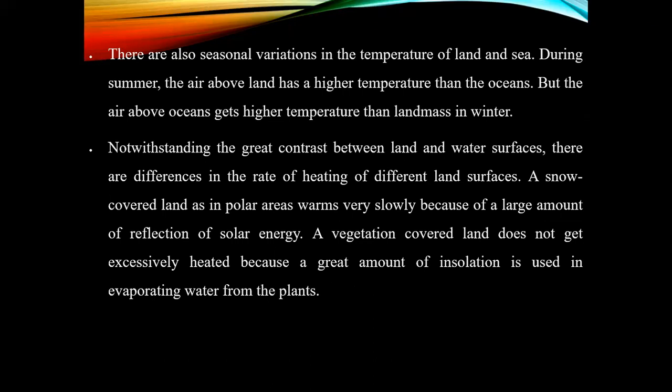There are also seasonal variations in temperature of land and sea. During summer, air above land has a higher temperature than the oceans, but air above oceans gets higher temperature than landmass in winter. A snow-covered land, as in polar areas, warms very slowly because of the large amount of reflection of solar energy. A vegetation-covered land does not get excessively heated because much insulation is used in evaporating water from plants through transpiration.